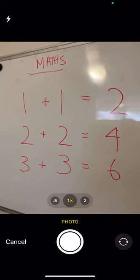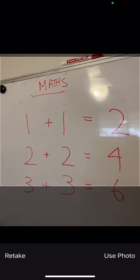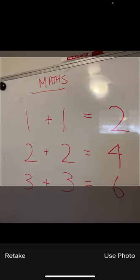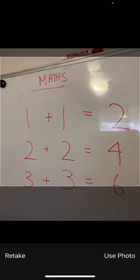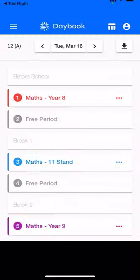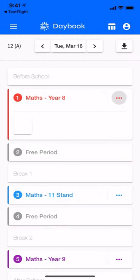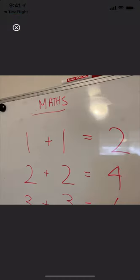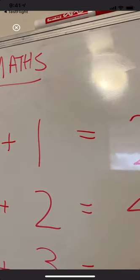I'm going to click on 'take a picture' — it's just a whiteboard — I can take a photo of that, and then I can move it around if I want or leave it as it is, and use that photo. This is going to attach it to that lesson in my diary, and I can tap on that photo to view a larger version of it.